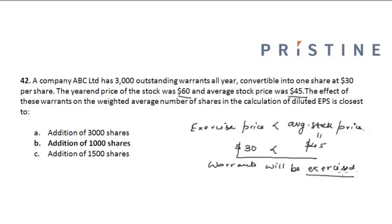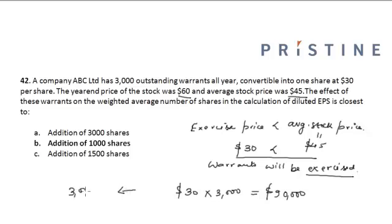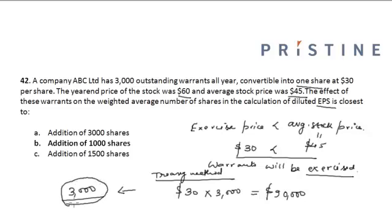The cash proceeds to the company from the exercise of the warrants will be $30 × 3,000 warrants, which equals $90,000. The number of new shares issued is 3,000, because each warrant is convertible into one share. However, for the calculation of diluted EPS we use the Treasury Stock Method, under which the $90,000 is utilized to repurchase shares.